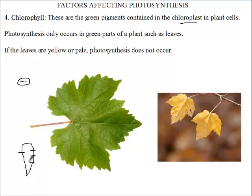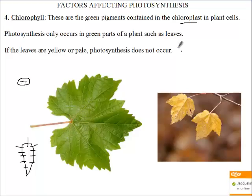The stem of the cactus is green in color, so in the cactus the stem is what undergoes photosynthesis. We normally see that the green parts of a plant are the ones that undergo photosynthesis, and a common example is the leaf.